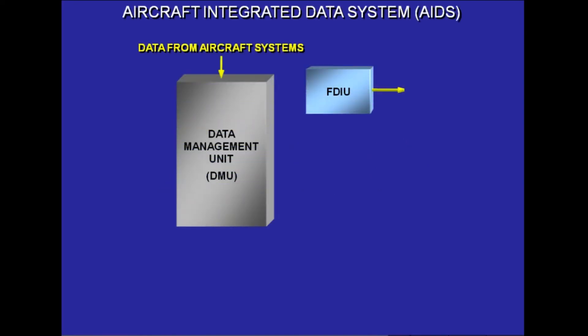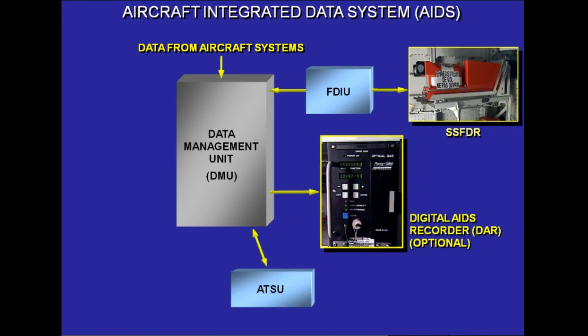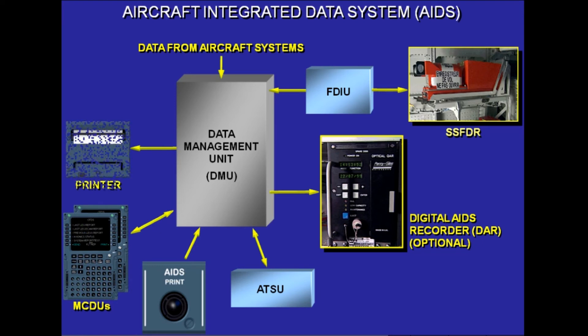The main functions of the aircraft integrated data system, AIDS, are to monitor engine condition, APU condition, and aircraft performance, and to perform troubleshooting assistance. The data management unit, DMU, is the heart of the AIDS.